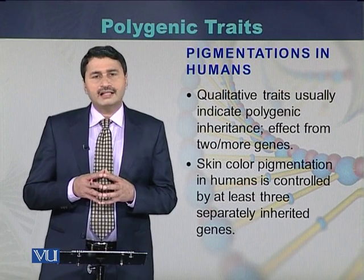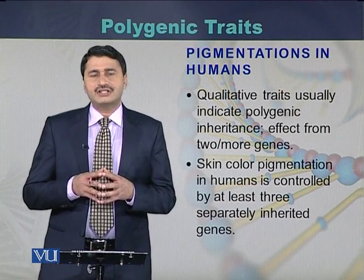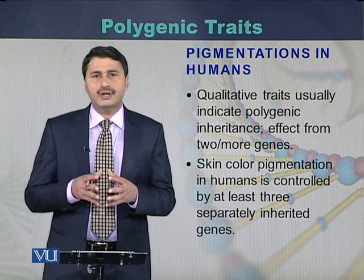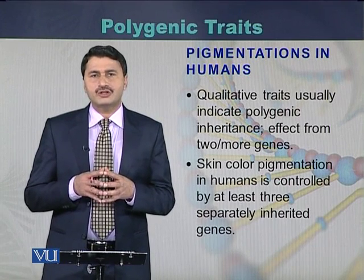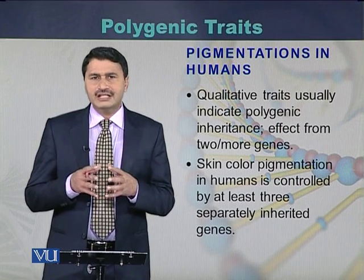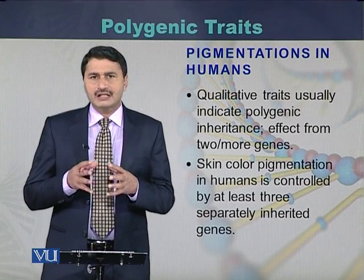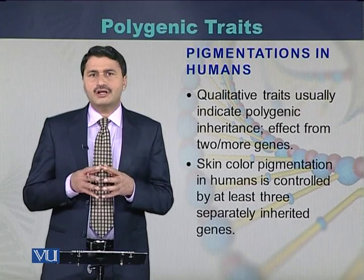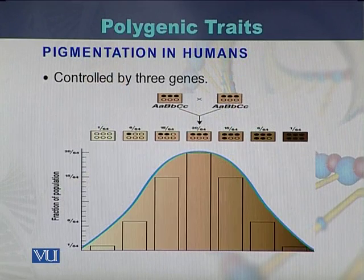Another example of a polygenic trait is skin color in humans. Skin color is controlled by at least three genes and is also considered a polygenic trait.